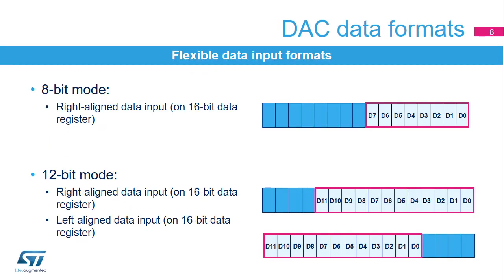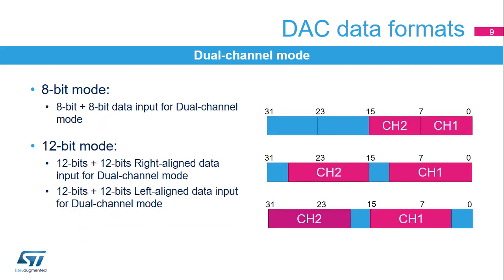The DAC can support different input formats. In 8-bit mode, it uses a right-aligned 8-bit data format, and also accepts unsigned and signed data formats. In dual-channel mode, it is an 8-bit plus 8-bit data format to provide input for two DACs. In 12-bits plus 12-bits mode, either a right- or left-aligned mode can be used. Data held in these registers are transferred to the related converters either synchronously — for instance for stereo audio — or asynchronously, meaning the two channels can operate independently.